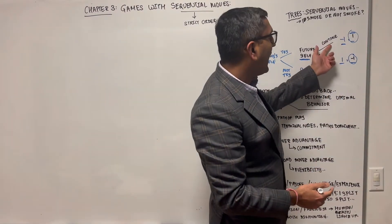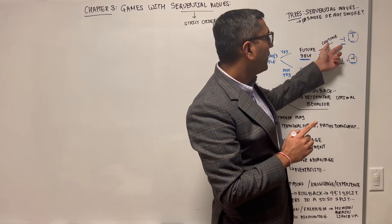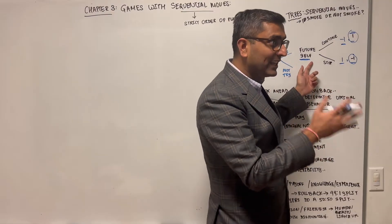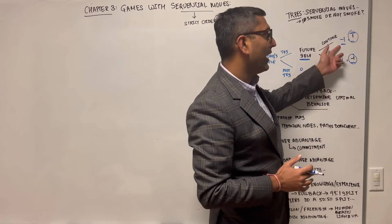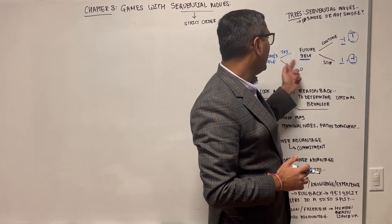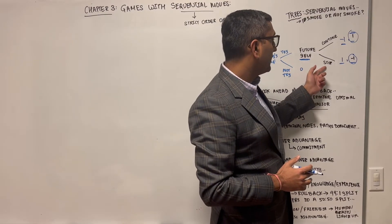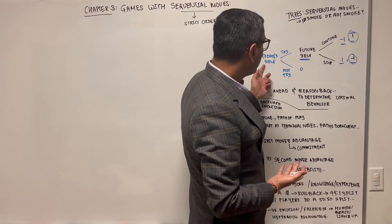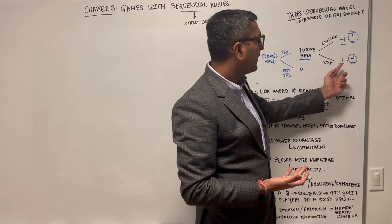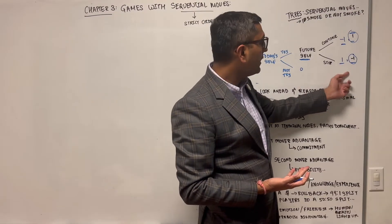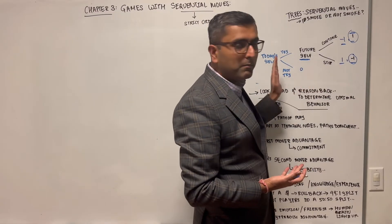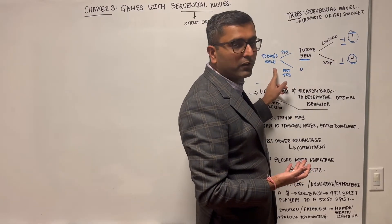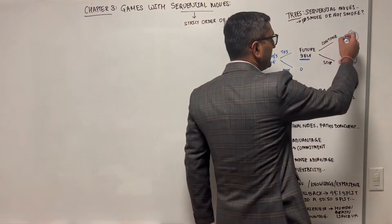Today's self has a different perspective, written in blue. Today's self gets a payoff of minus one if the future self continues to smoke — they wanted the future self to be smarter and stop. Today's self gets plus one if the future self stops smoking. So the payoffs for today's self and future self are written in blue and black respectively.